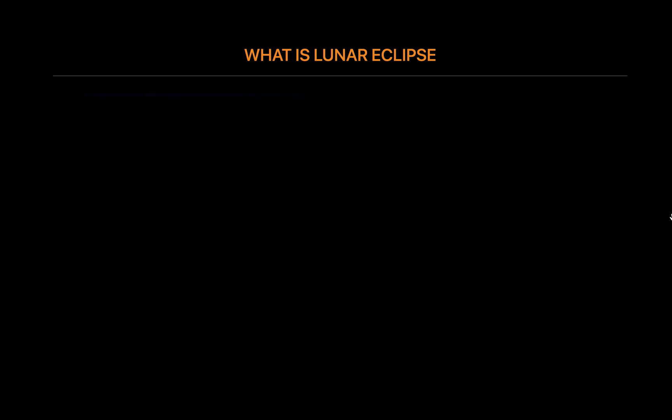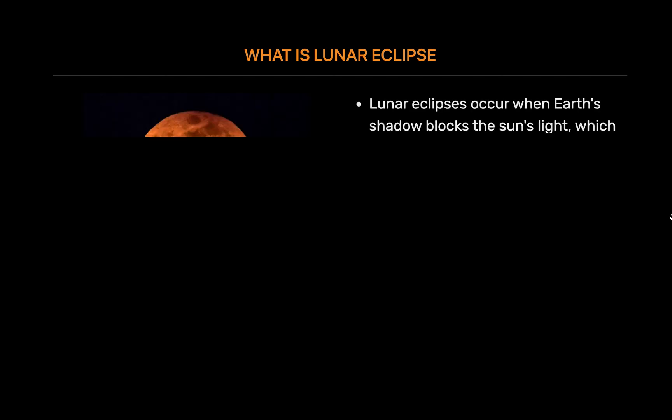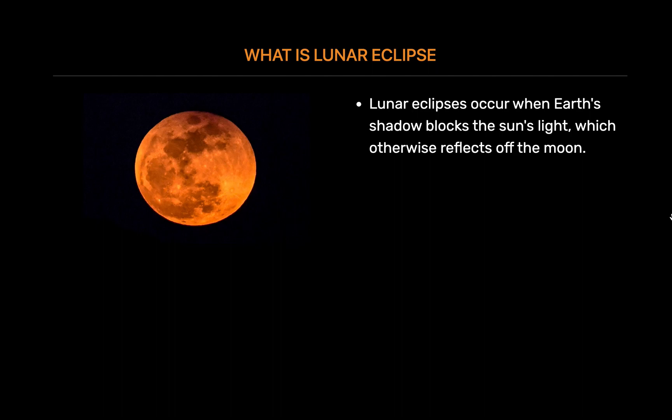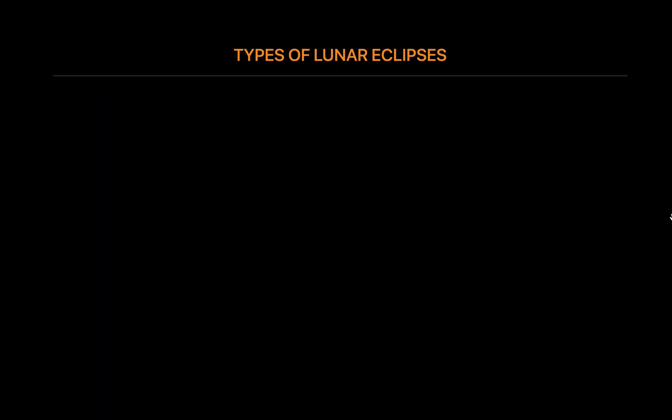What is a lunar eclipse? A lunar eclipse can occur only at full Moon. A total lunar eclipse can happen only when the Sun, Earth and Moon are perfectly lined up. Anything less than perfection creates a partial lunar eclipse or no eclipse at all.